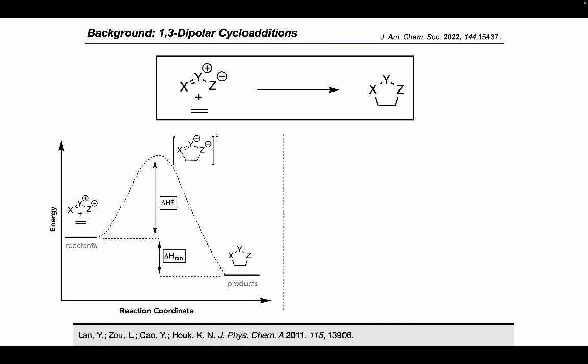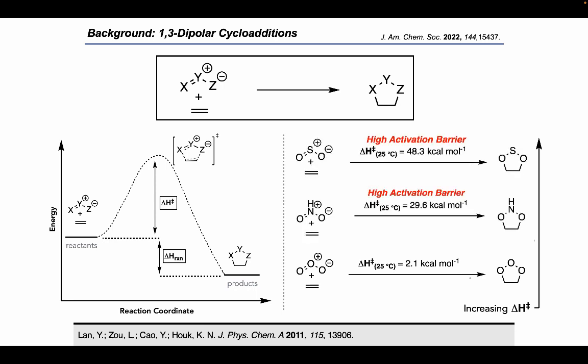As I mentioned on the previous slide, ozonolysis is considered a 1,3-dipolar cycloaddition. The reason why ozonolysis is so reliable and works so well is because its activation barrier is really low. It's only 2.1 kilocalories per mole. As you change the central atom to nitrogen or sulfur, you significantly increase that activation barrier to create that cycloadduct. I mentioned in my title I'll be talking about nitroarenes. However, as you can see, the activation barrier is quite high to form the cycloadduct, which is called a dioxazolidine.